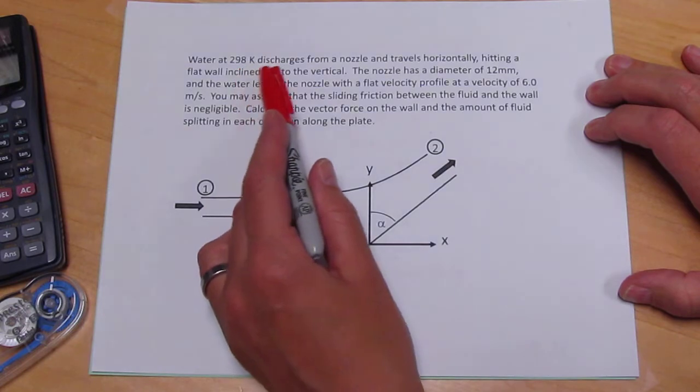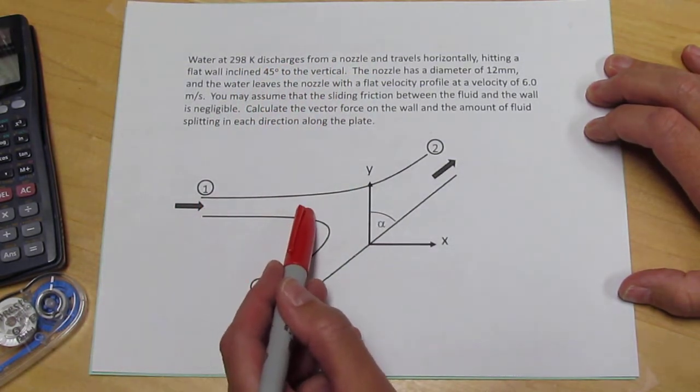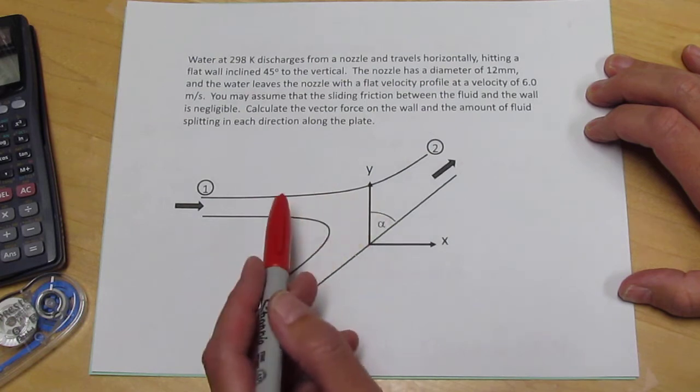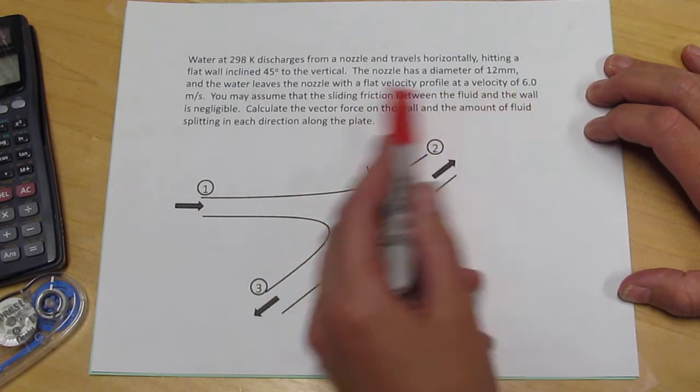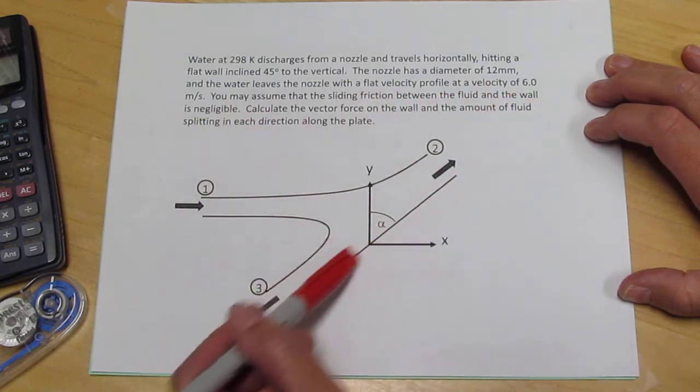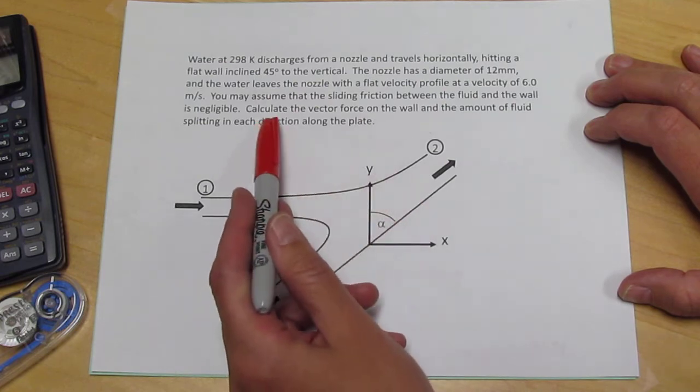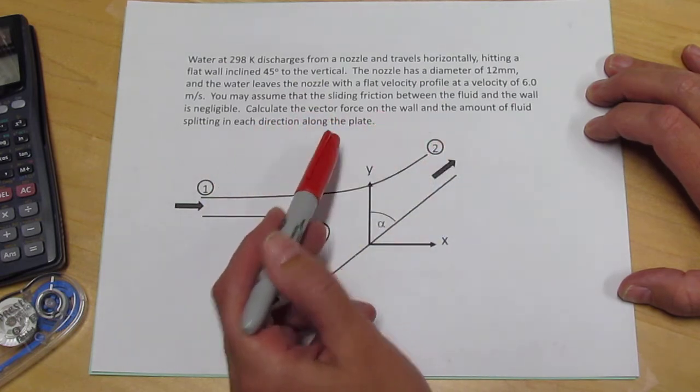Water discharges from a nozzle and travels horizontally, hitting a flat wall inclined 45 degrees to the vertical. The nozzle has a diameter of 12 millimeters and the water velocity is given. You may assume the sliding friction between the fluid and the wall is negligible. Calculate the vector force on the wall and the amount of fluid splitting in each direction along the plate.